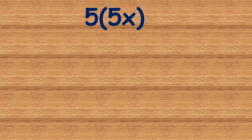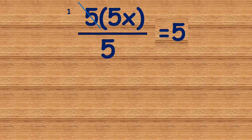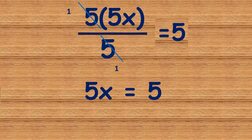So we are looking for 5x. What we can simply do here is divide 5 by 5 — we have 1 at the numerator, and then at the denominator we have another 5; divide 5 by 5, we have another 1. So simply, 5x is equals to 5.